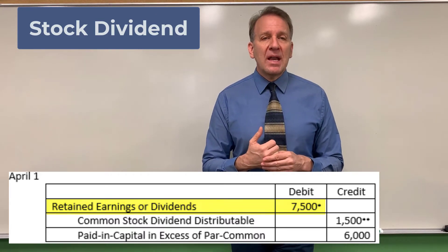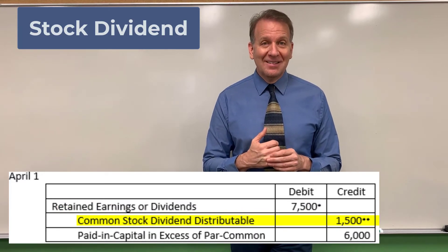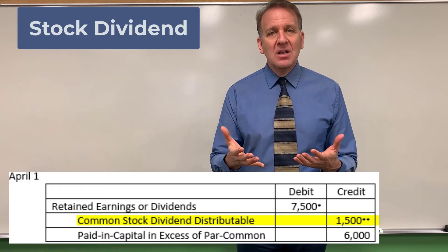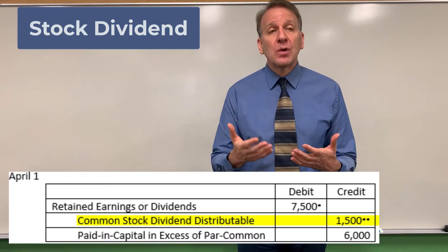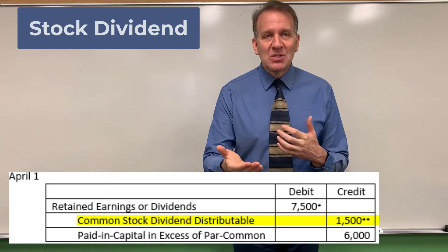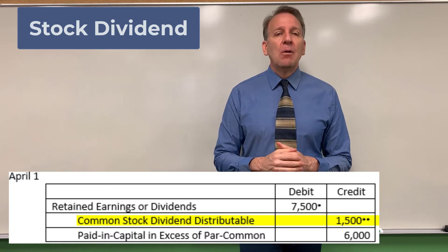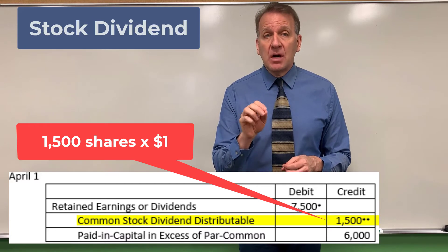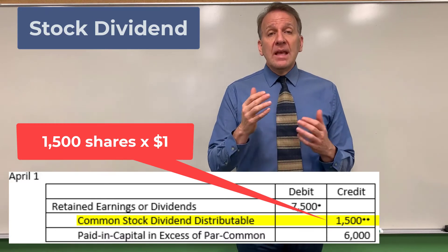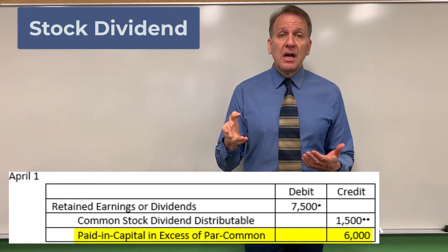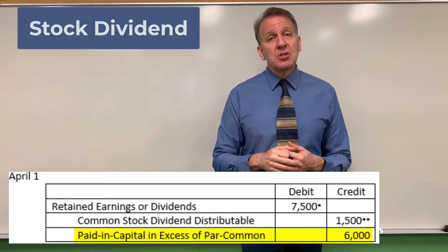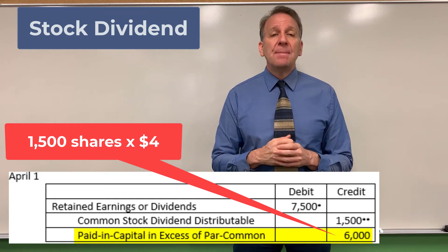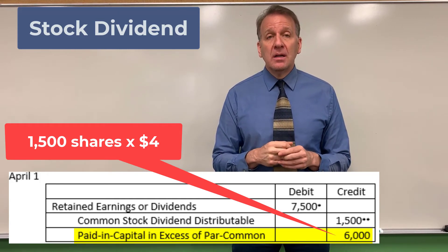We credit common stock dividend distributable — a new account — because we're going to be distributing common stock but haven't distributed it yet, so we can't credit the common stock account. That credit is for 1,500 shares times the $1 par value, which is $1,500. The excess above par is $4 per share ($5 minus $1). So 1,500 shares times $4 gives us $6,000, which we credit to paid-in capital in excess of par — common stock.